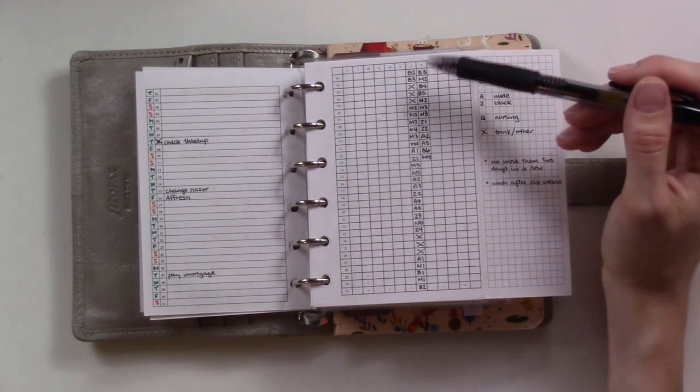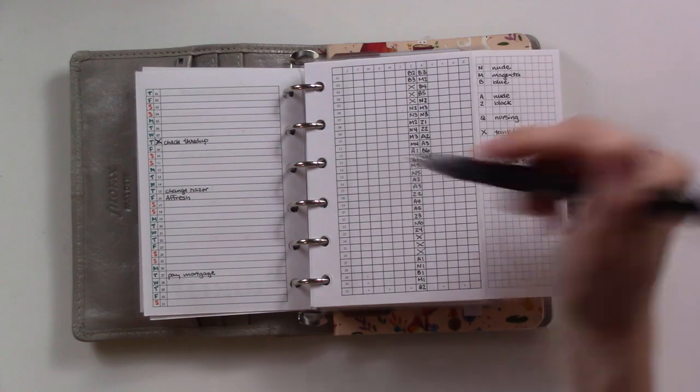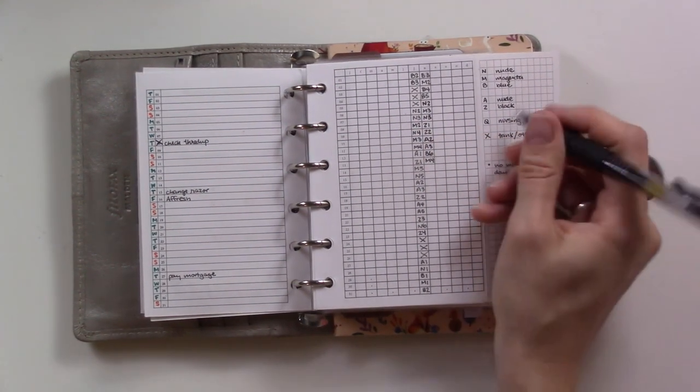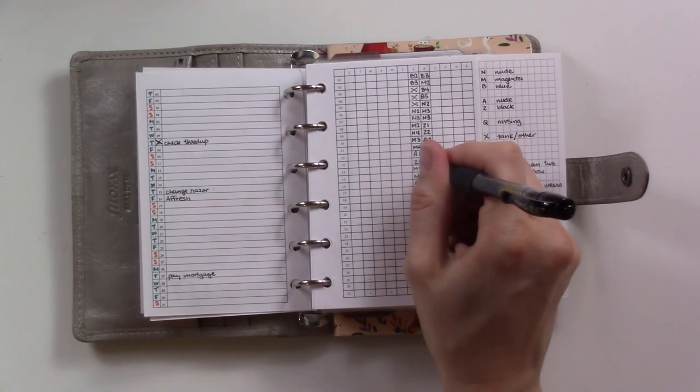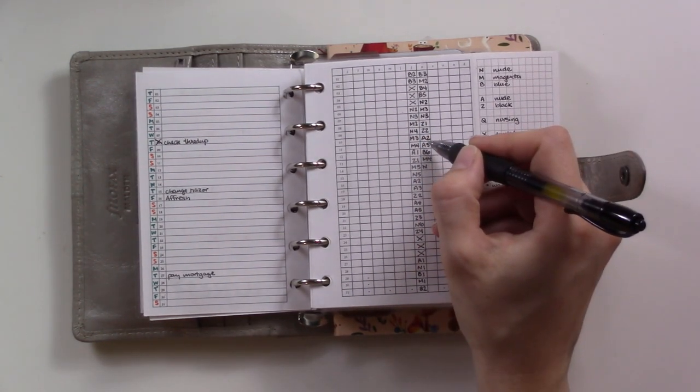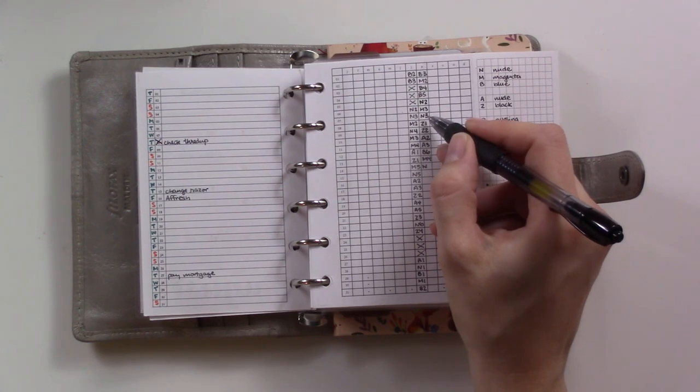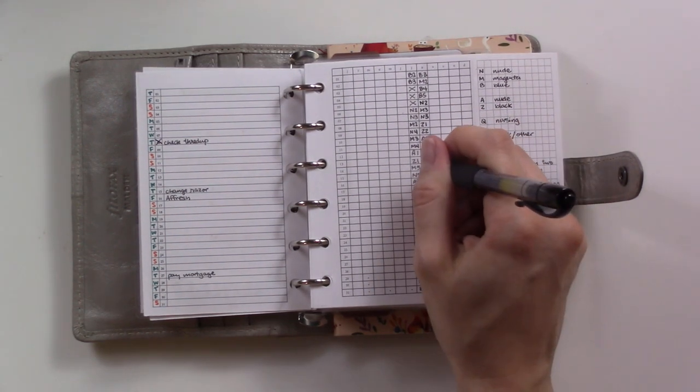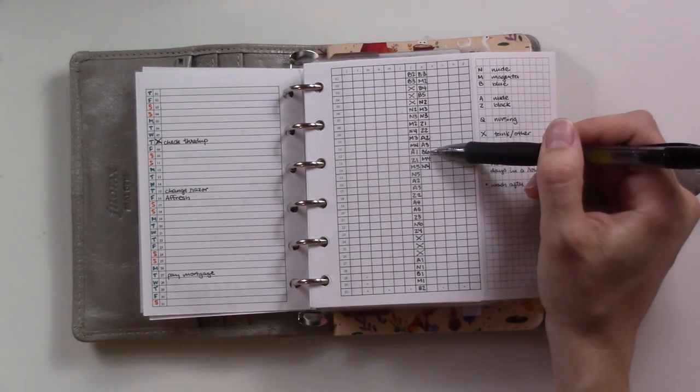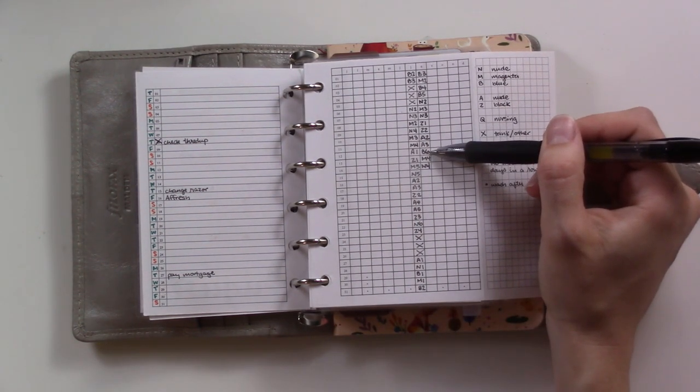For example, I'm filming this on the 14th and I'm currently wearing the nude bra, so I put an N. Then I look up and see when was the last time I wore that. It was here on the 7th and it was N3, so today is N4, the fourth wear. You'll notice two days ago I wore the blue bra and it was the sixth time that I had worn that since it had been washed.